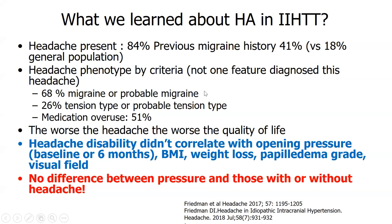The IIH Treatment Trial showed that most IIH headaches are migrainous or probable migraine phenotype, while a third have tension-type headache with no nausea or light/sound sensitivity. About half had medication overuse, which worsens headaches. Importantly, headache disability did not correlate with opening pressure, BMI, weight loss, papilledema grade, or visual field severity. Headache is truly its own separate problem — even pressure levels were identical in those with and without headache.